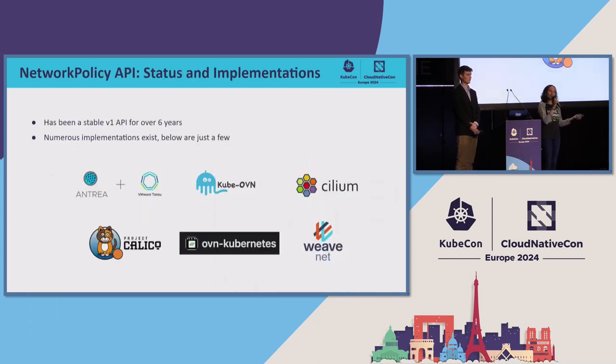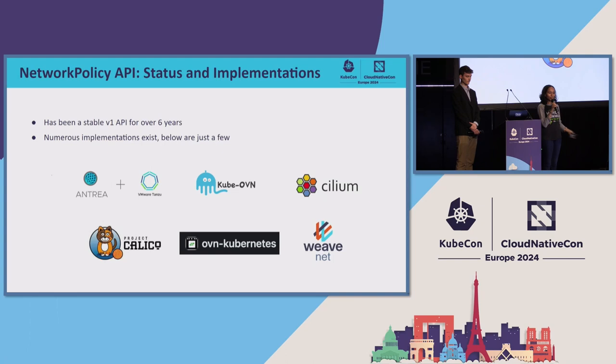The stable network policy API has been around for a really long time. We have a lot of implementations — these are the commonly known ones that are still active in the community.